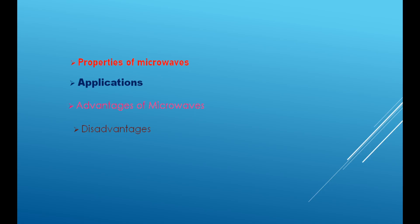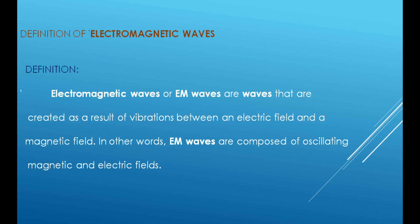Before I start the class, I will once again repeat what is an electromagnetic wave. Electromagnetic waves are composed of oscillating magnetic and electric fields.